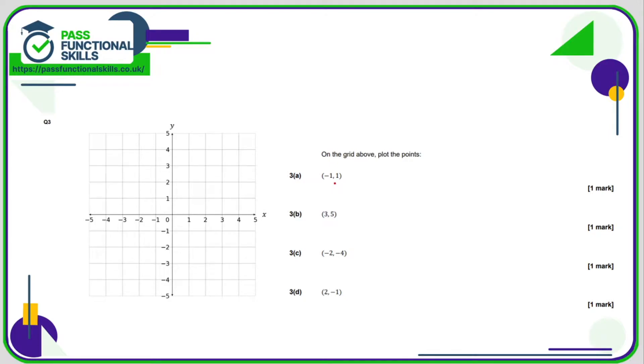Here we're plotting the points. So minus one, one: go across to minus one and then up to one, there's point A. Three, five: we're going across to three, up to five, there's point B. Minus two, minus four: go across to minus two and then down to minus four, that's point C. And D is two, negative one: go across to two and then down to minus one, there's point D.